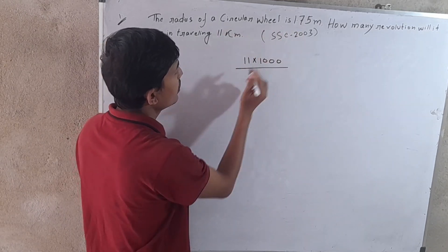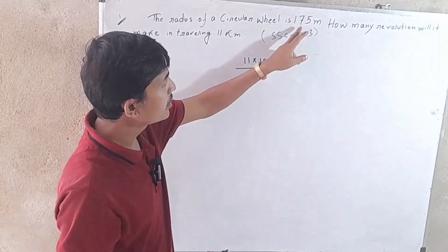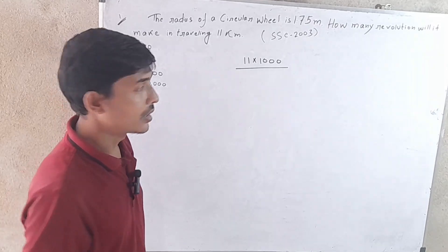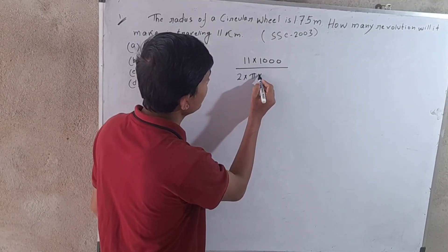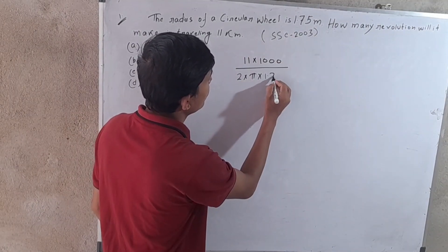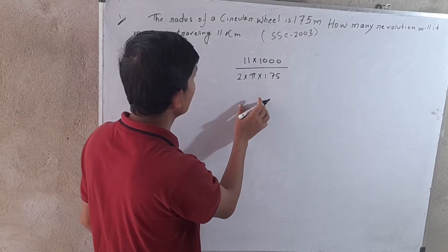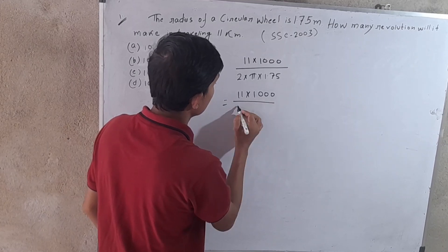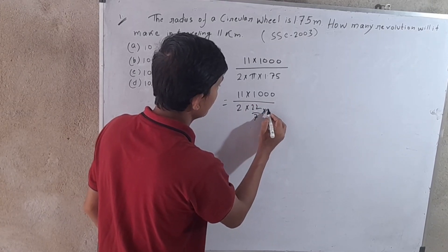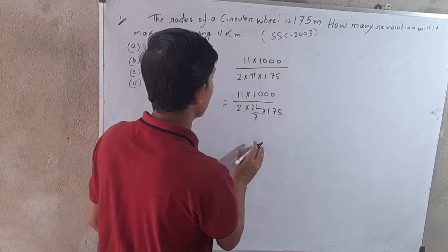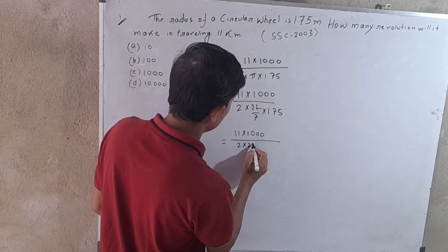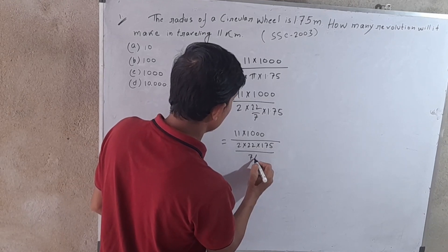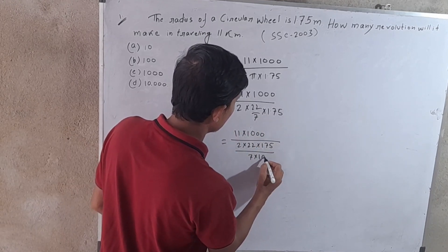The circumference formula is 2πr. So we calculate 2 into pi into 1.75, doing the multiplication step by step.